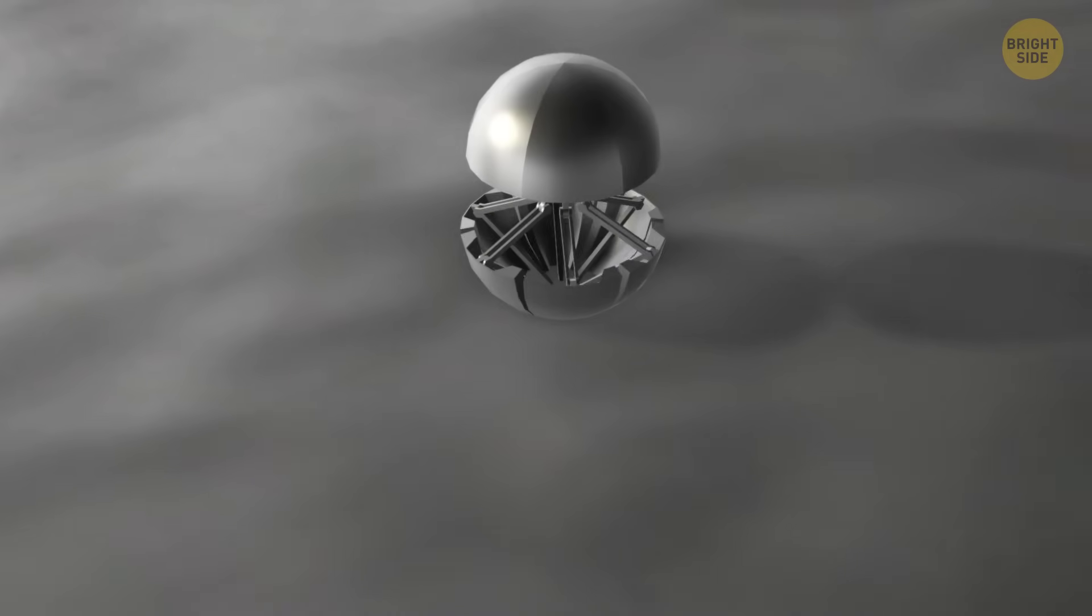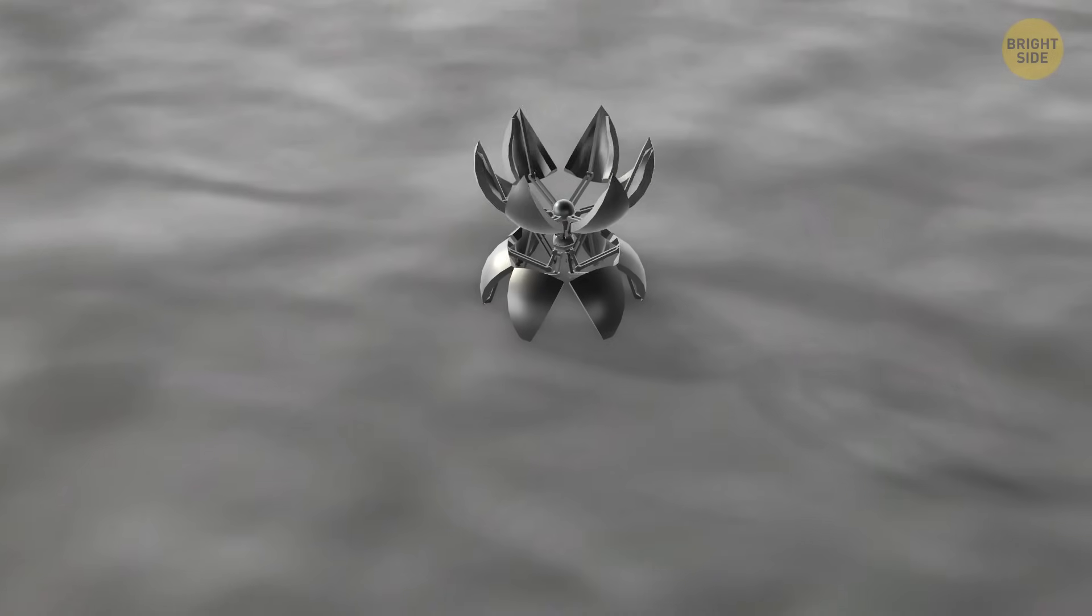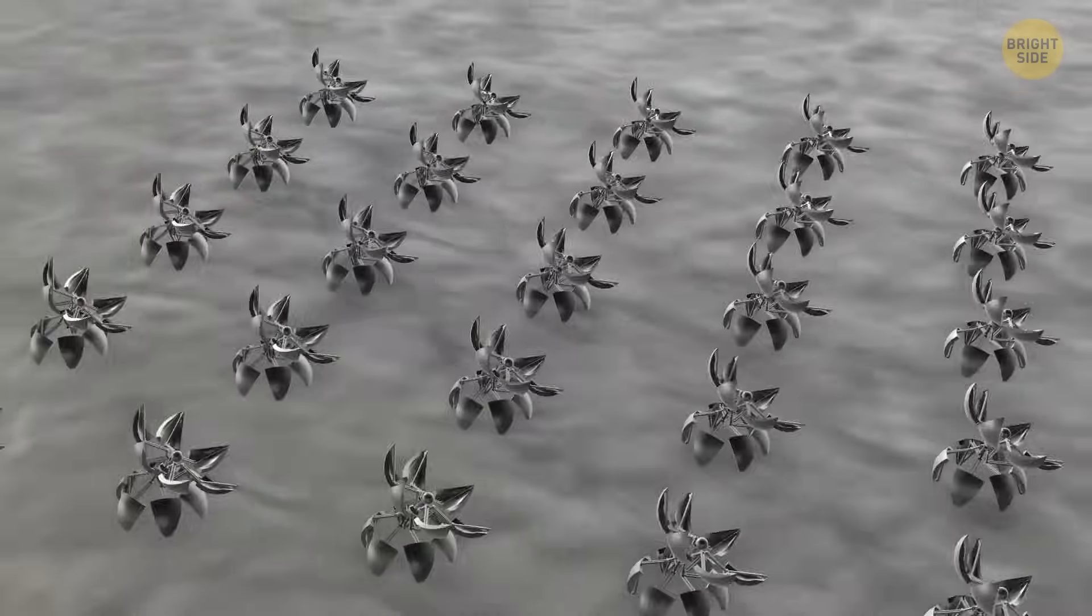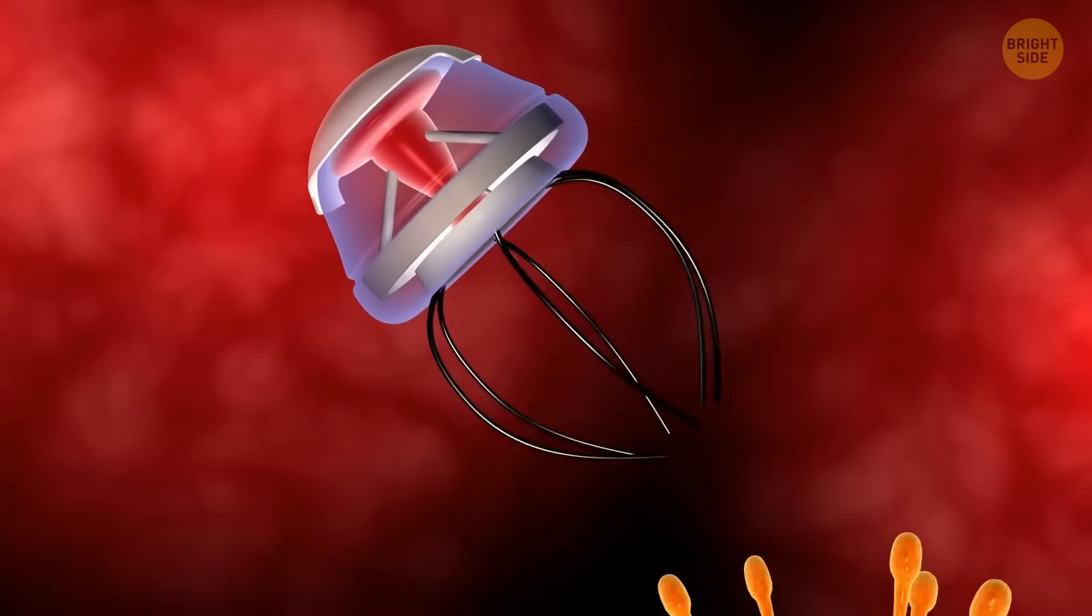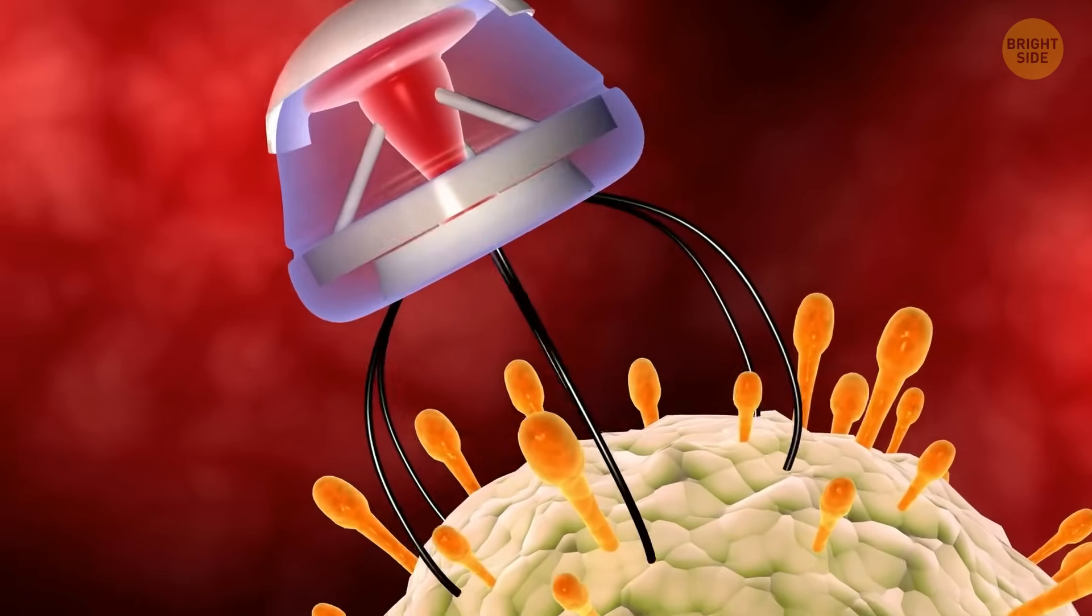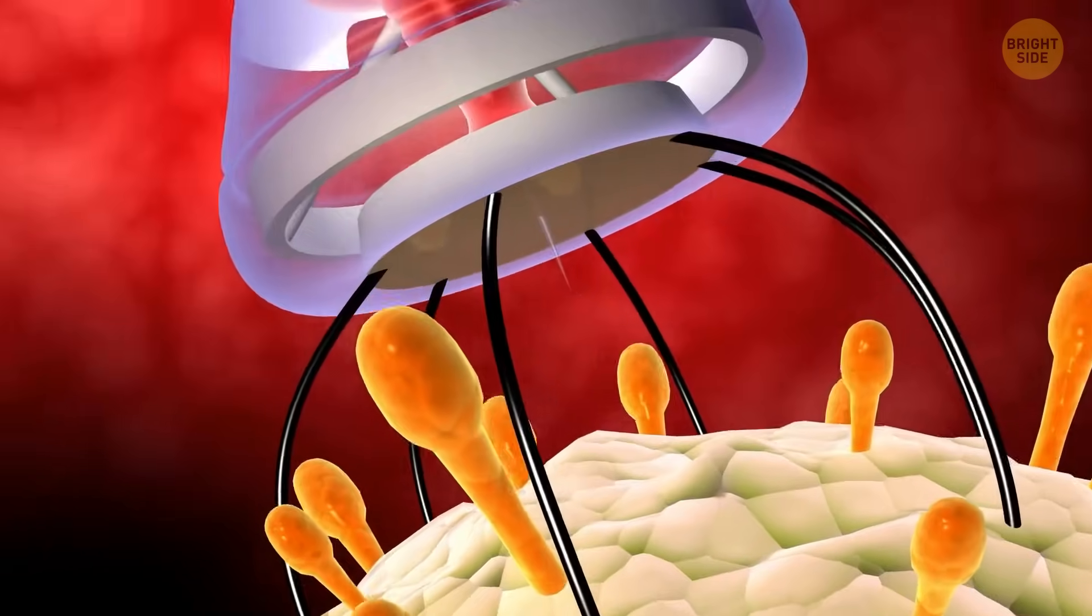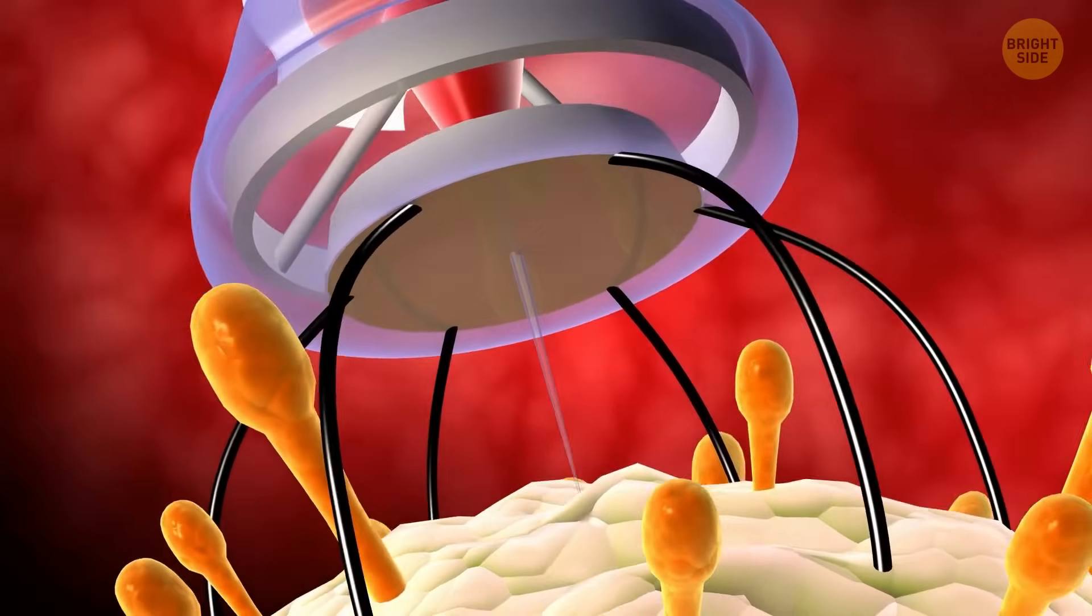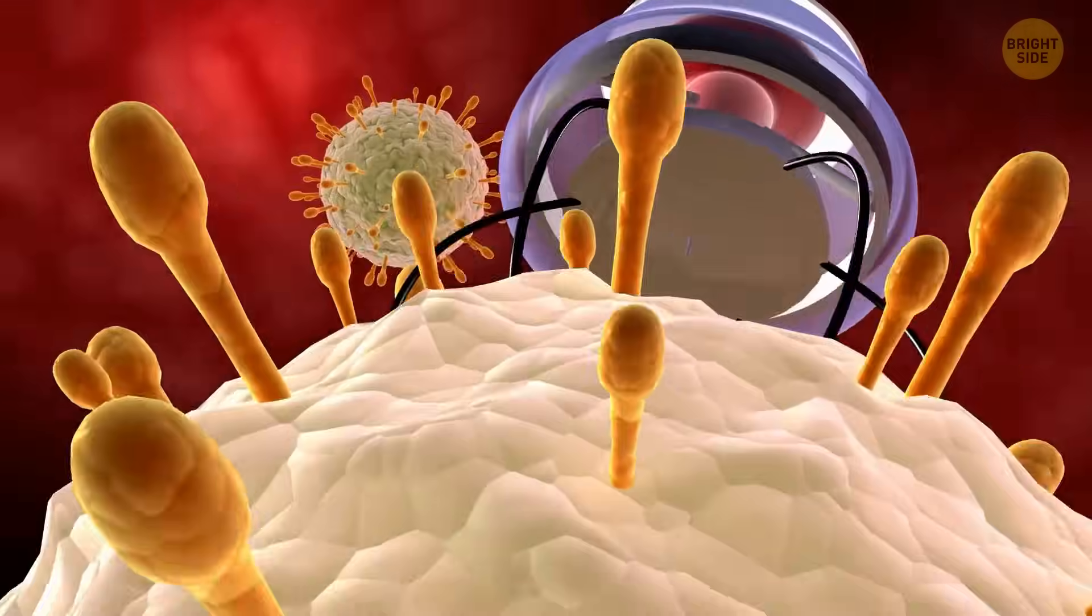But here's the twist - if you put these robots in a place with extra DNA, they can use it to build copies of themselves. That's right, they can self-replicate. And if they get into your bloodstream, they could theoretically use your DNA as building blocks to create an army of clones. Pretty cool, but also very terrifying.